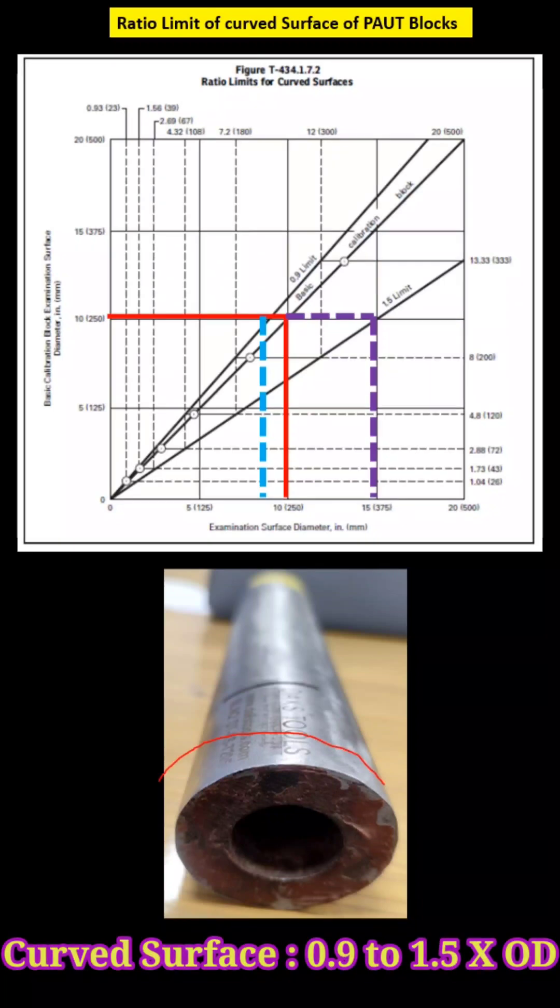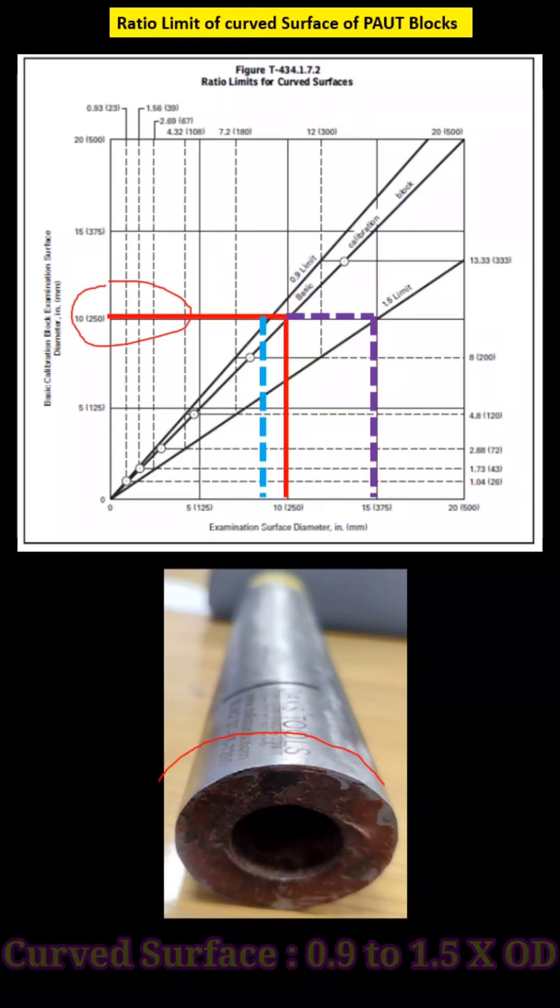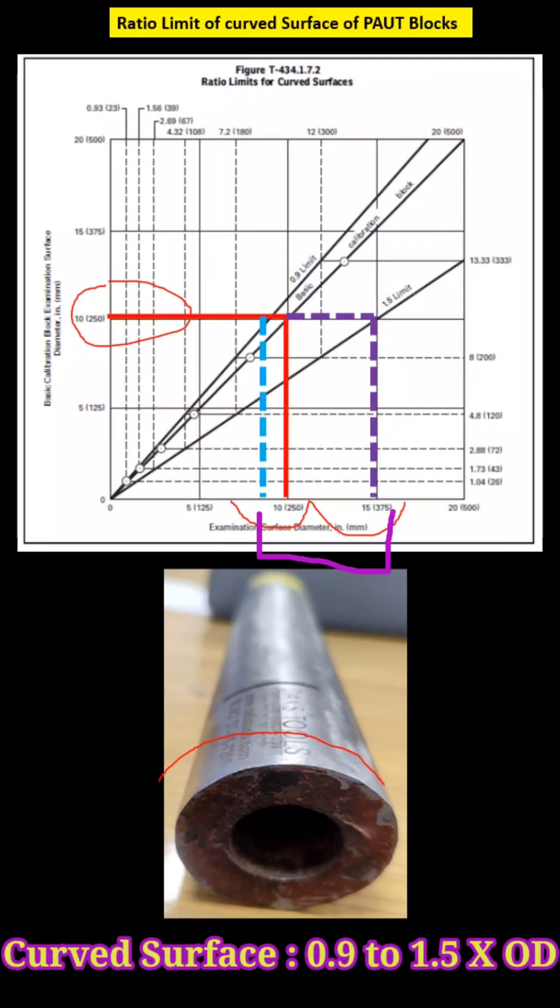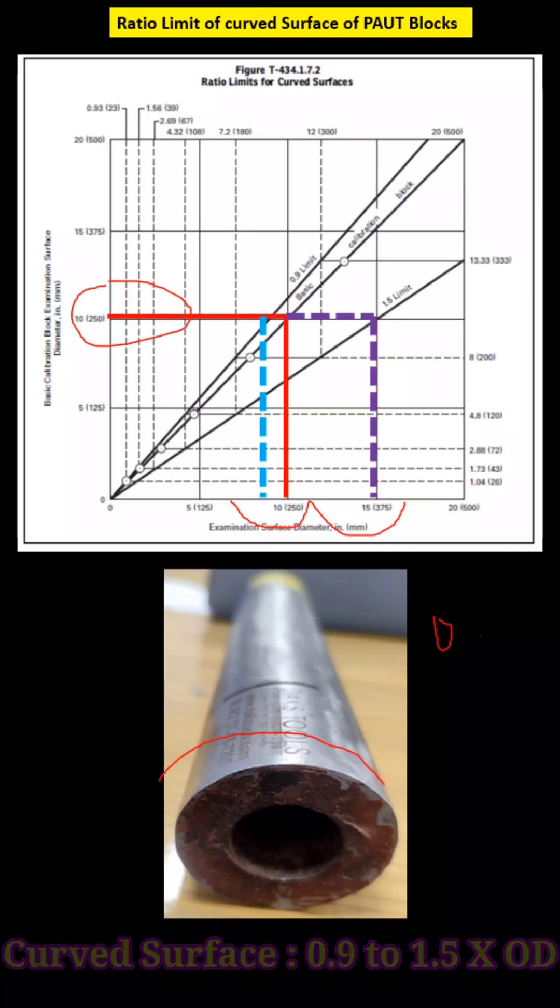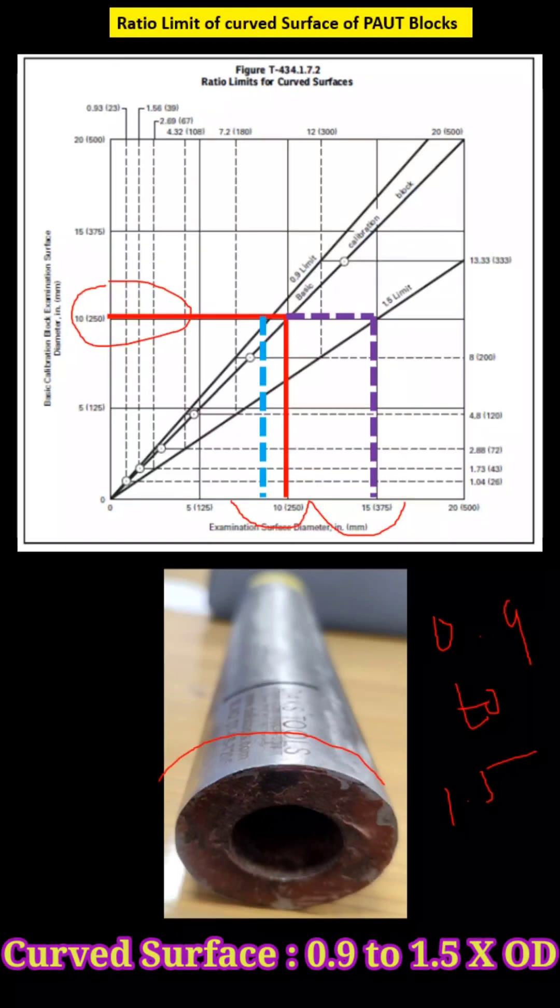So if you are using a 250 mm calibration block, our range of curved surface will be 225 to 375 mm we can use. This is as per ASME Section 5. So 0.9 to 1.5 times the outer diameter, we can use the curved surface.